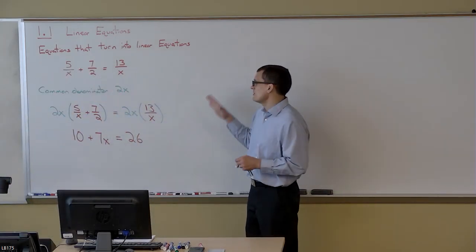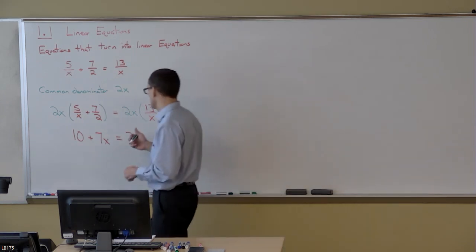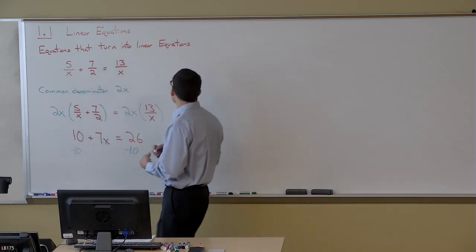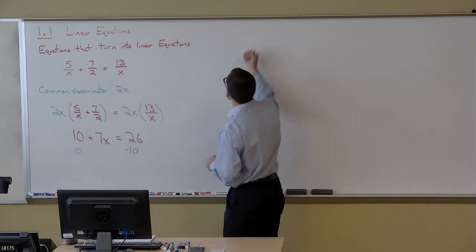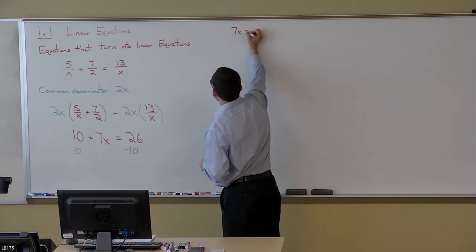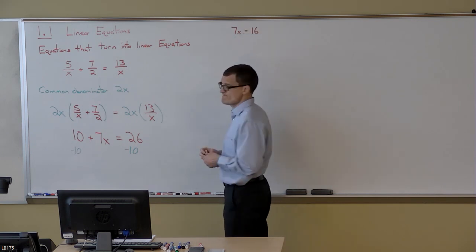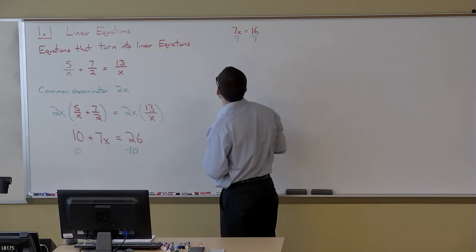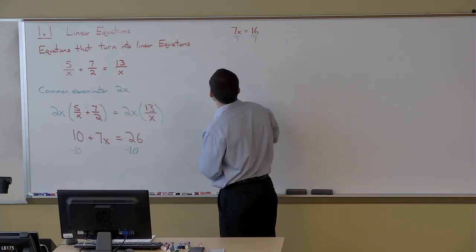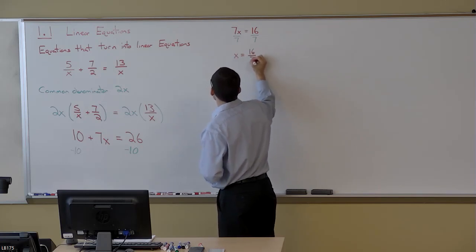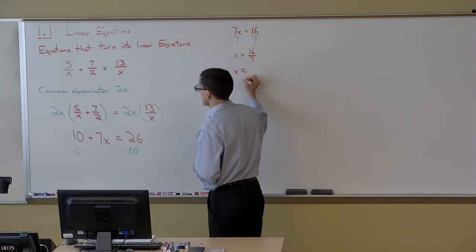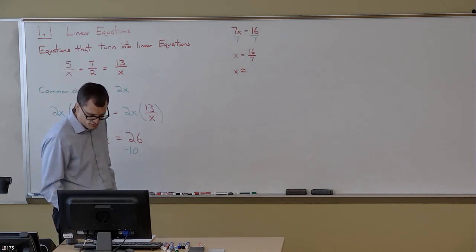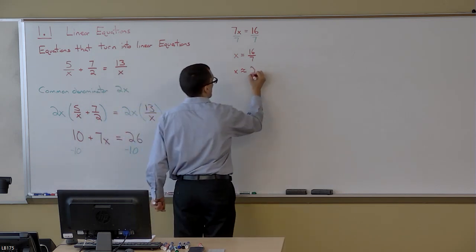I'm going to get all of my variables on one side, all of my constants on the other. The quickest way to do that is to subtract 10 from both sides, giving me 7x equals 16. Then I divide by 7 on both sides, giving me x equals 16 over 7 for an exact answer, or approximately 2.29 rounded to two decimal places.